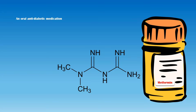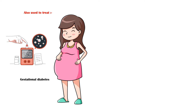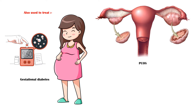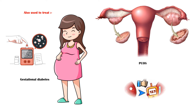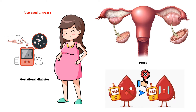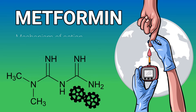Metformin is an oral anti-diabetic medication used as the first-line treatment option for type 2 diabetes. It is also used in the treatment of gestational diabetes, polycystic ovarian syndrome, and for the prevention of diabetes in pre-diabetic individuals. In this video, our primary goal is to explore the mechanism of action of metformin.